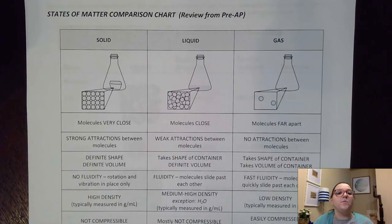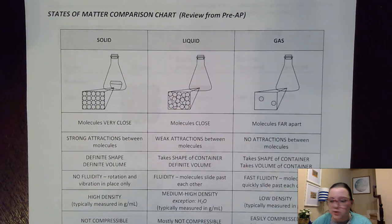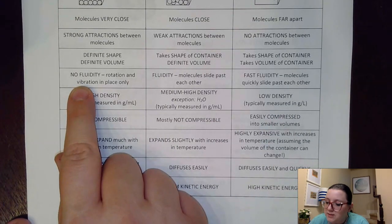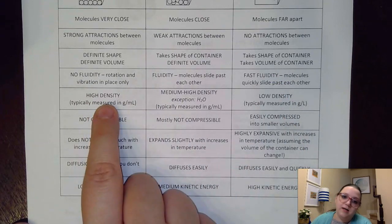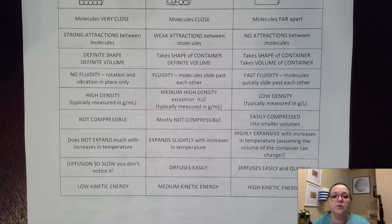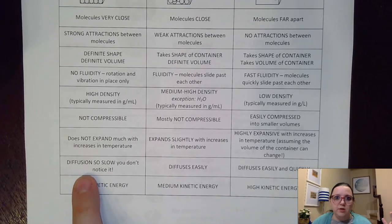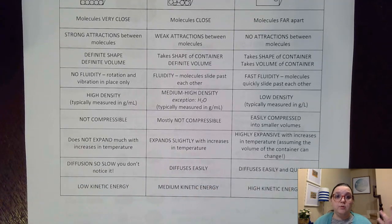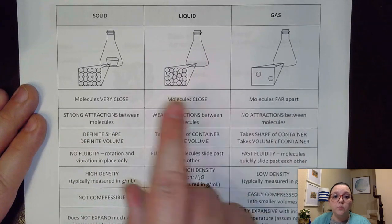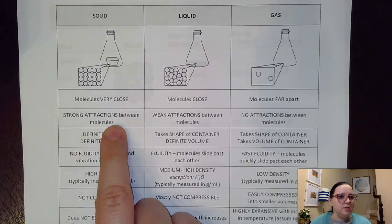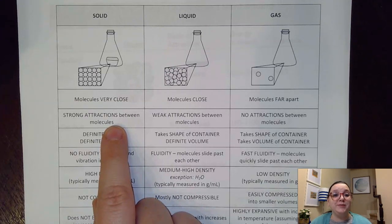This chart is a refresher from pre-AP comparing solids, liquids, and gases — covering traits like fluidity, density, compression, expansion, and diffusion. Solids have no fluidity and high density; gases are very fluid with low density. The key piece is attractions: solids have very strong attractions holding molecules close. I use the word 'attractions' rather than bonds or IMFs because it actually depends on what substance you have.